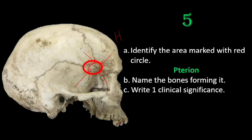The clinical significance of this region is that just beneath the pterion you find the anterior branch of the middle meningeal vessels and the stem of the lateral sulcus of the brain.